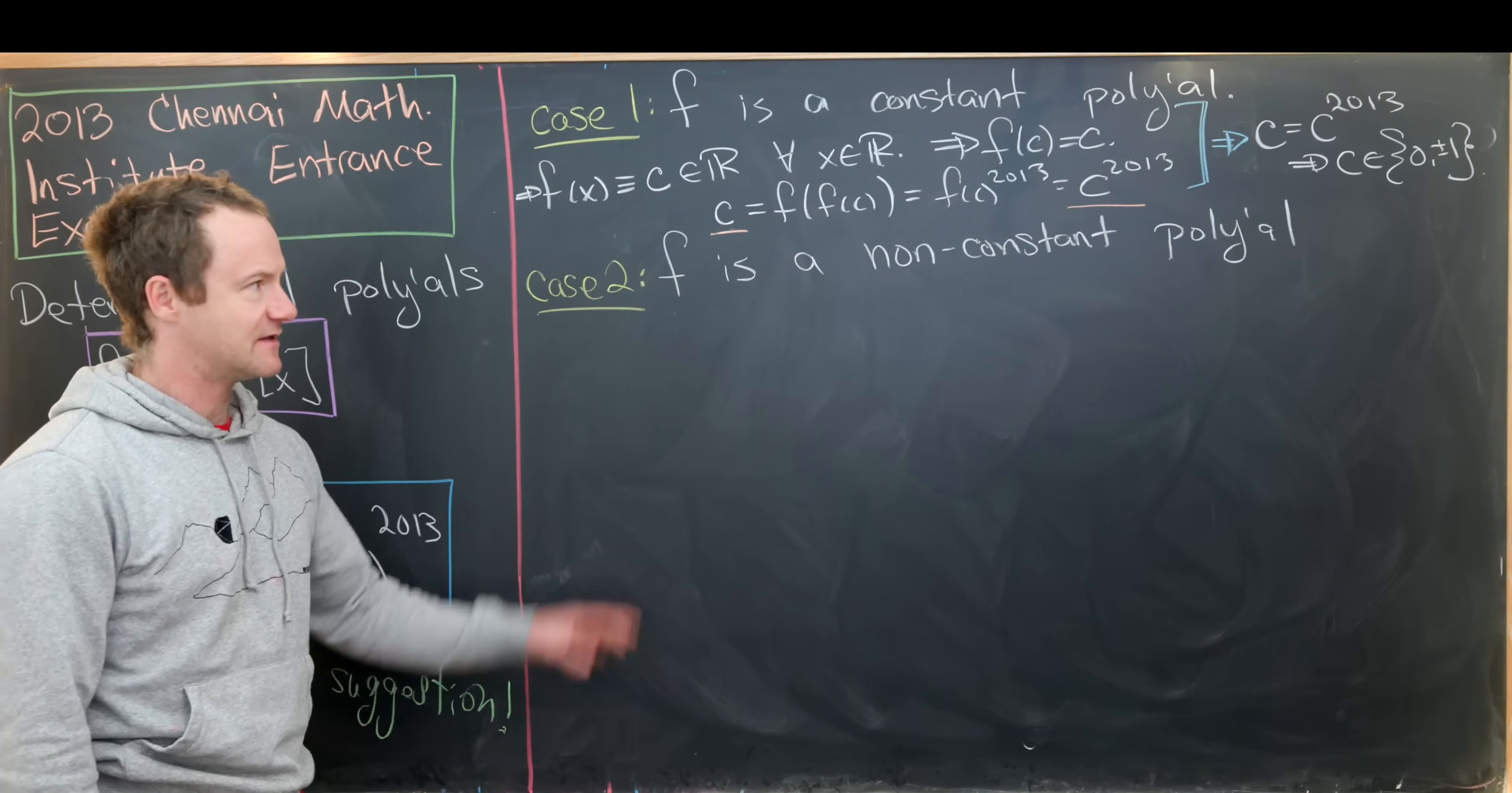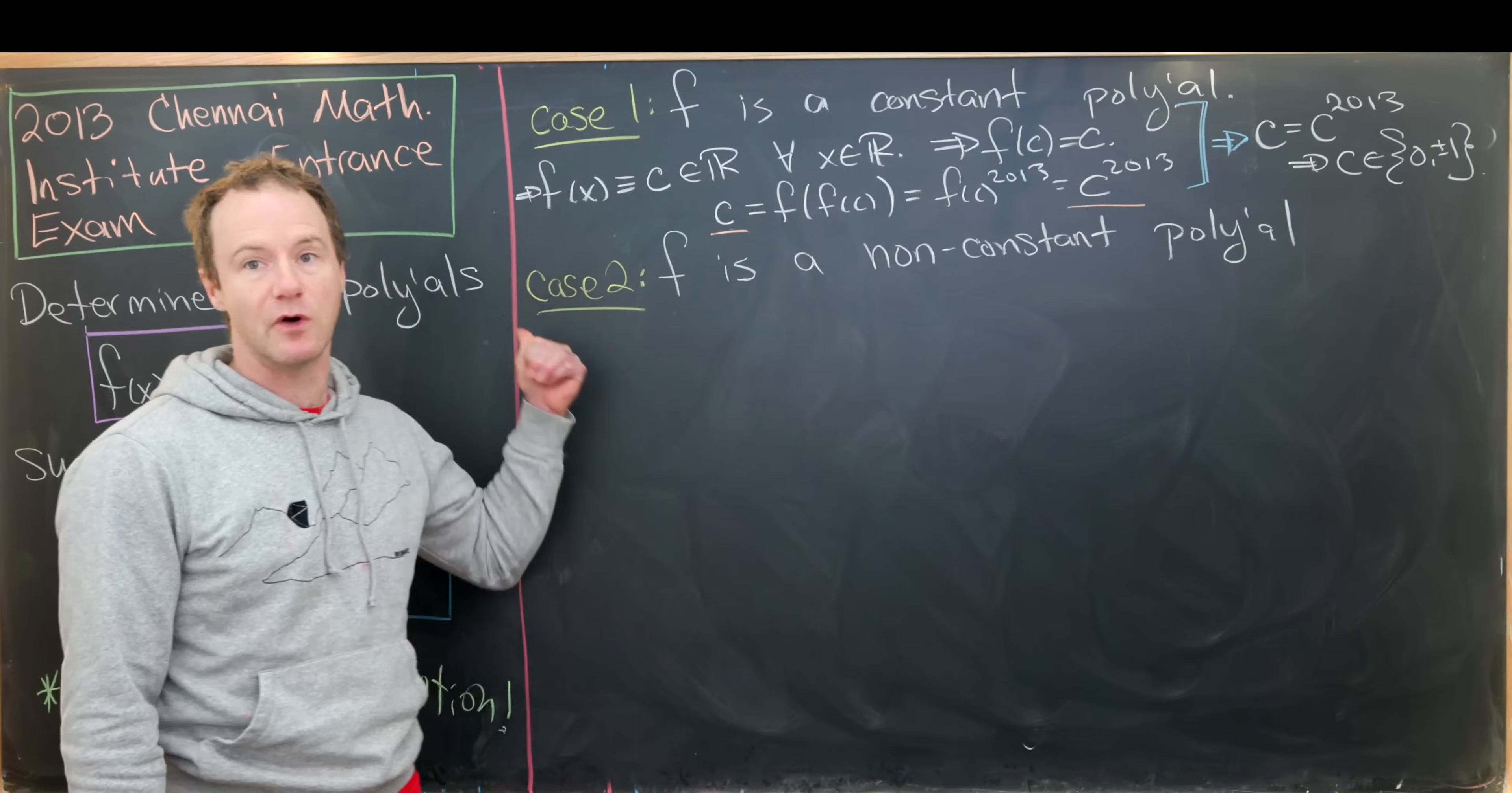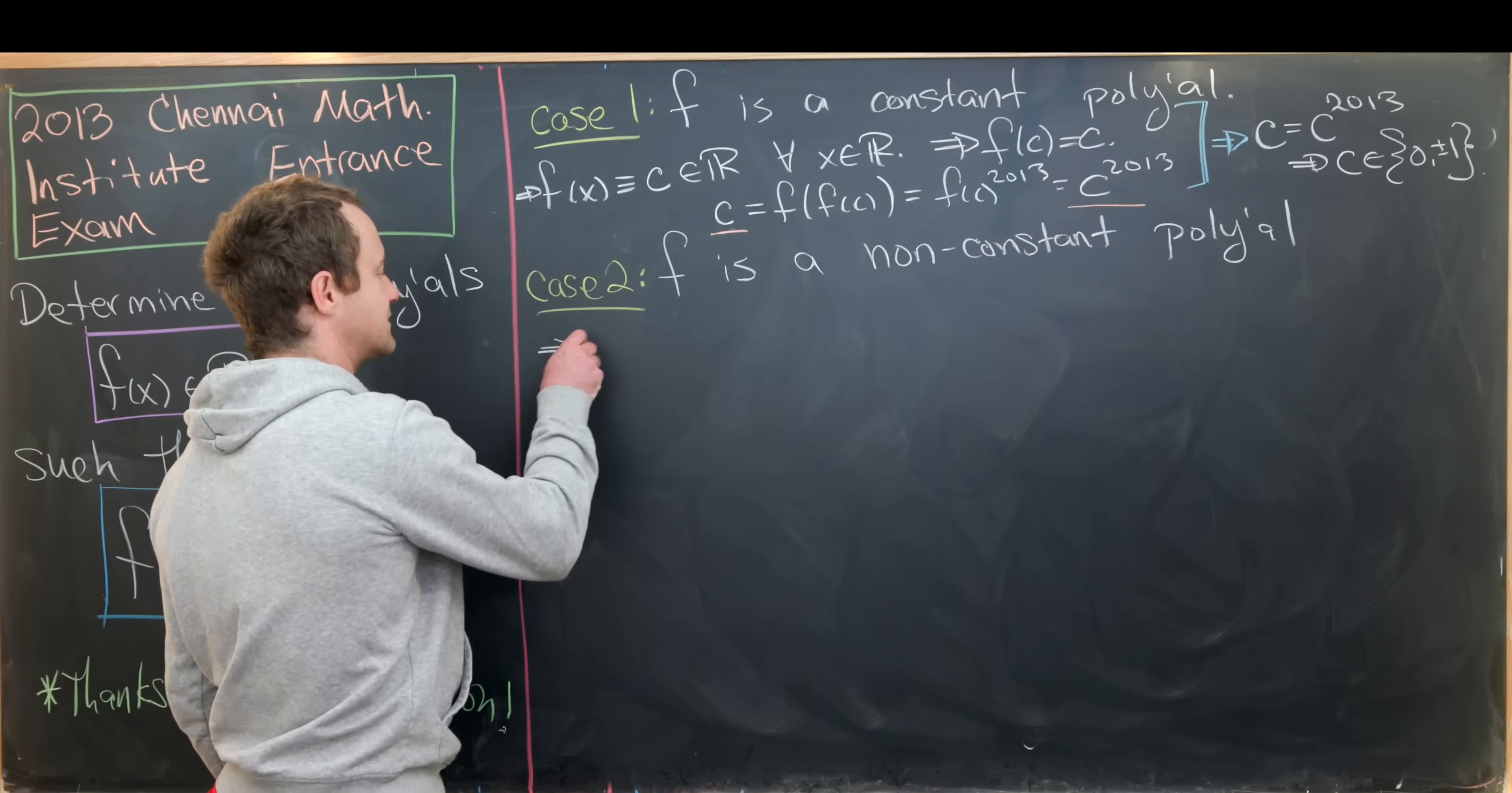We're going to use the fact that non-constant polynomials take on an infinite number of values. I think that's pretty clear from the end behavior. If it's an even polynomial and the leading coefficient is positive, then that means it tends towards infinity in both directions. If it tends towards infinity, then that means it's going to take on infinitely many values. The same kind of thing happens for an odd polynomial as well. So we know that this thing takes on an infinite number of values. That's going to be the first observation that we make.